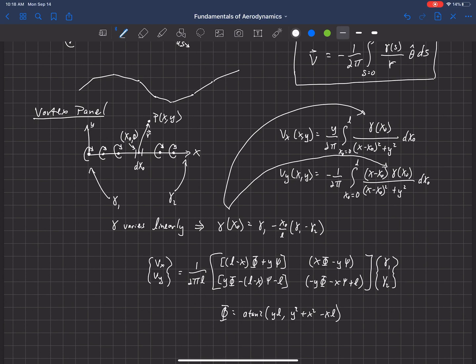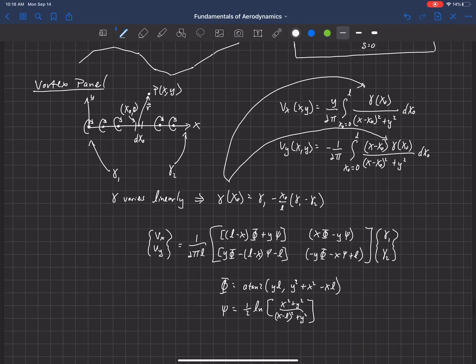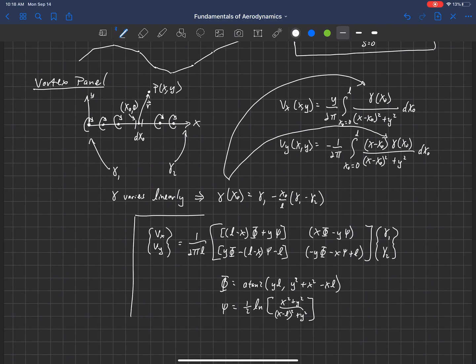Capital Ψ is equal to one half times the natural log of (x² + y²) over ((x - l)² + y²).